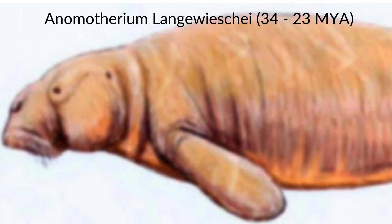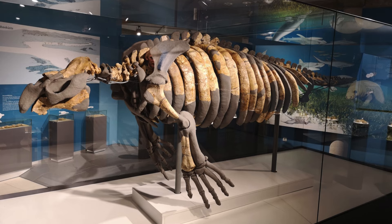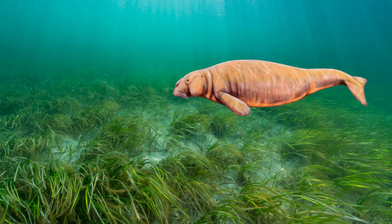Myosireninae was the very first subfamily to appear, with the genus Anomatherium, containing just one species, Anomatherium langueschi. Anomatherium lived in the Oligocene epoch 34 to 23 million years ago in northern Germany. This species shared very similar dietary habits to its descendant. Anomatherium, along with occasionally feeding on molluscs, would also have fed upon sea grasses in the shallow sea beds of where it lived.